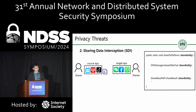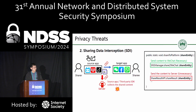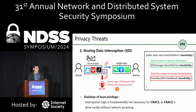The second pattern is sharing data interception, as illustrated by the code snippet on the right. After the sharer clicks the share button, the source app executes the first line of code and sends the corresponding URL to the target app — we use WeChat in this instance. This process is vital because its purpose is to send the corresponding URL to the sharee. However, certain source apps or third-party SDKs will also collect the shared content to their server, as demonstrated in the second line of code. According to GDPR and CCPA, this violates the principle of least privilege, since CRACS is done locally without any network access — so the source app or third-party SDK interacting with their server is unnecessary.